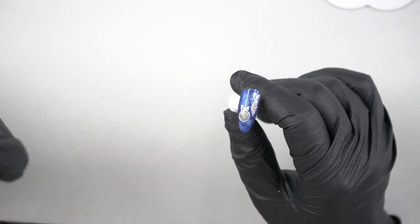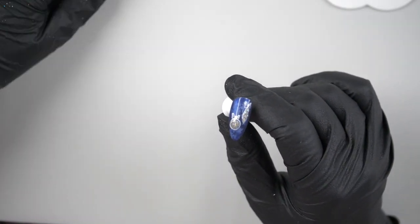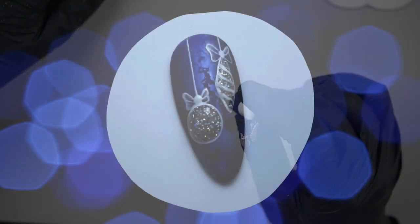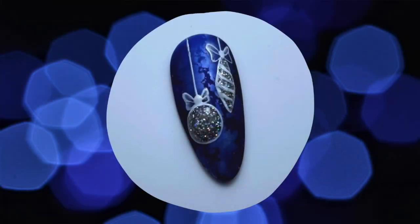Once you're happy with your bows then you can put the whole thing into cure for 120 seconds. Now that's cured, that is our bauble foil sandwich design done. I hope you like it. Everything that I've used will be in the description box below. Don't forget to like and subscribe and we'll see you in the next video. Bye!